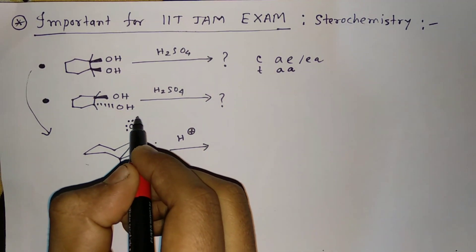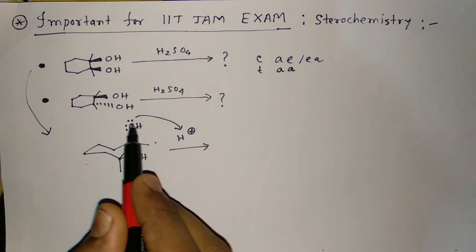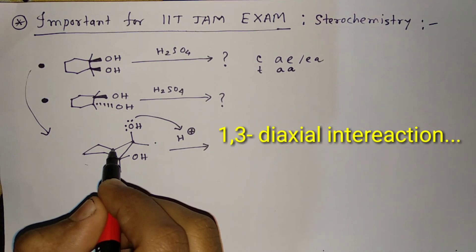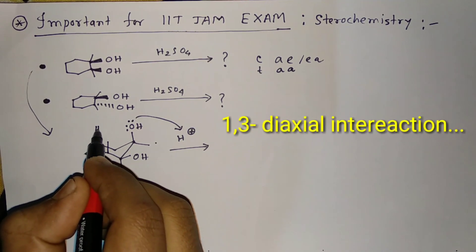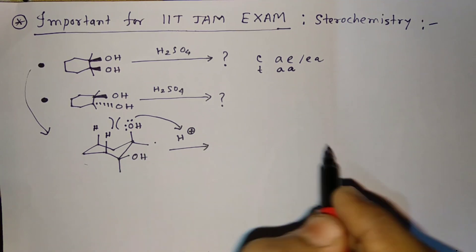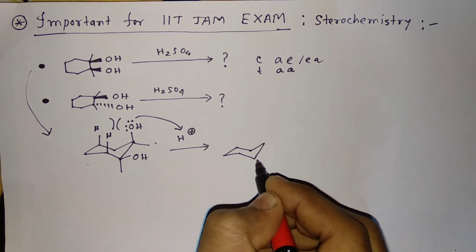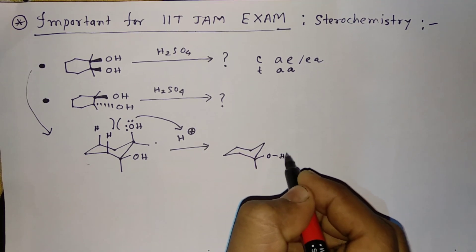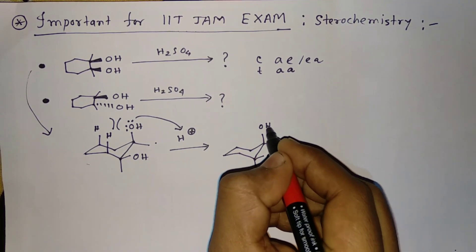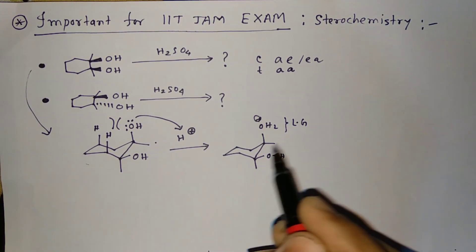This OH attacks the hydrogen because this OH creates more repulsion with this kind of hydrogen, so this OH will be detached easily from the system. After taking this, the system will be like this: OH₂⁺, and this is a leaving group.